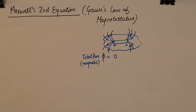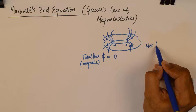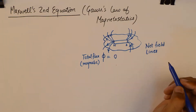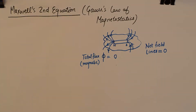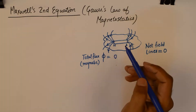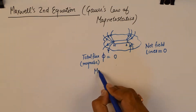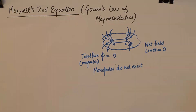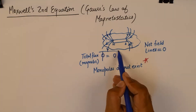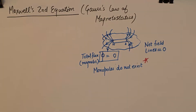The number of field lines that are going outside of the surface of the volume will also enter the surface of the volume. So the net field lines coming out or going inside remain equivalent to zero. If you can understand this very basic concept, which stems from the fact that monopoles do not exist, this becomes our starting point that leads to a very simple equation: that the total flux is zero.